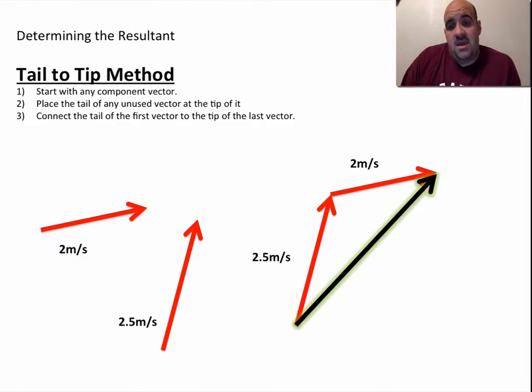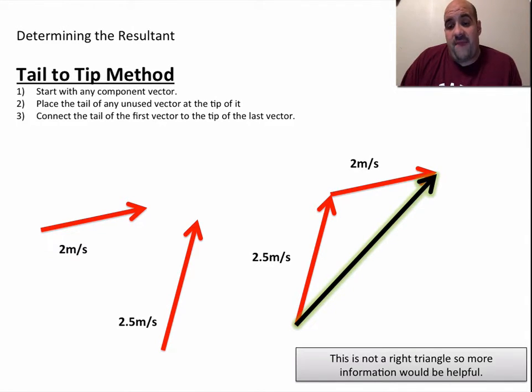You are simply done. Now, you would normally have to do some calculations, but this is not a right triangle. So, more information would be very helpful for us in this case to actually put some angles and numbers in here. Normally, in class, you would be given an angle. We might say this is 15 degrees. And maybe this is 80 degrees.